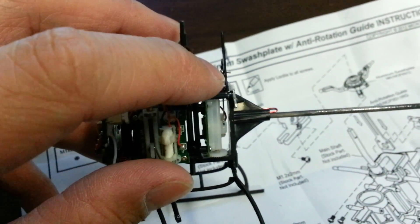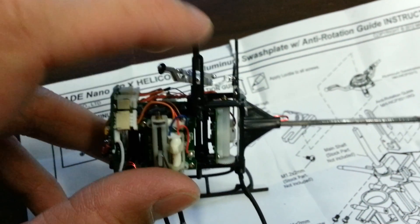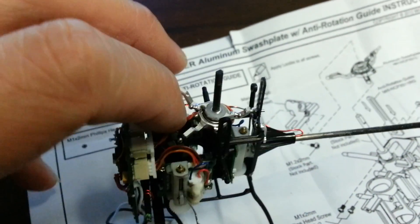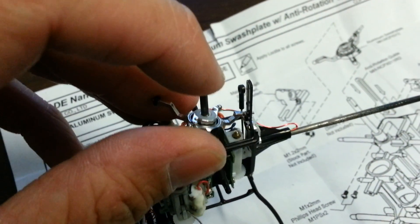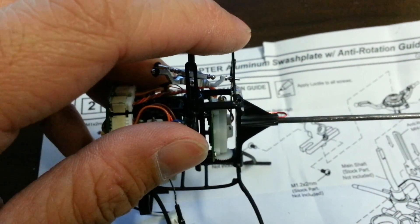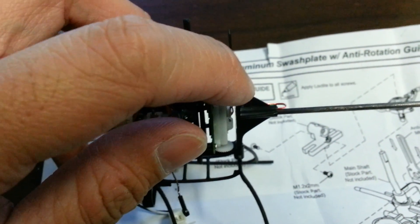The ball for the link is rubbing the bracket right here, the carbon bracket. There's really no fix for it. If I flip the anti-rotation bracket around and trim the frame down, the pin is not really long enough.